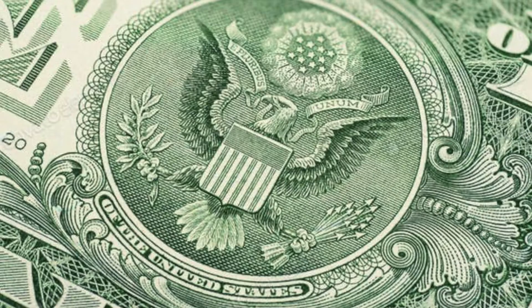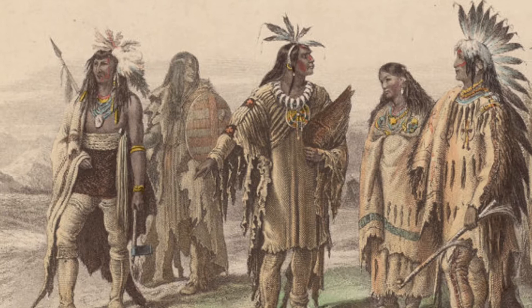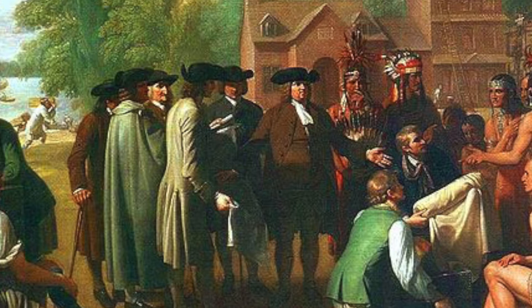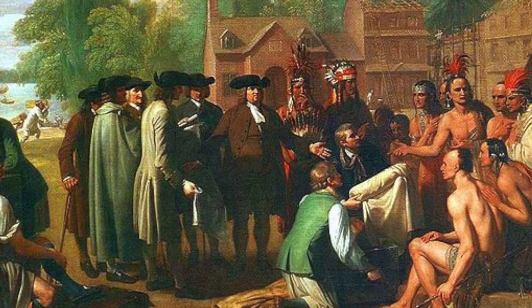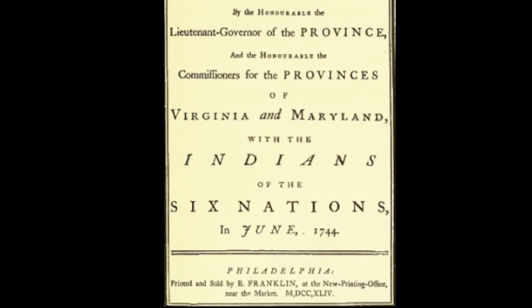The 13 arrows on the seal got there through an interesting story. It started way back before the Revolutionary War with the Iroquois Indian tribes. There were five Iroquois nations who were constantly fighting until they formed a confederation and agreed to unite. In 1744, Benjamin Franklin and a number of the English colony leaders came together to discuss forming their own confederation, and they invited a leader from the Iroquois nations to give a speech on how their nations had formed an alliance.